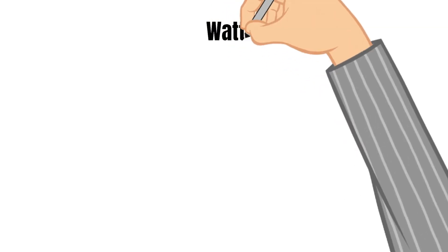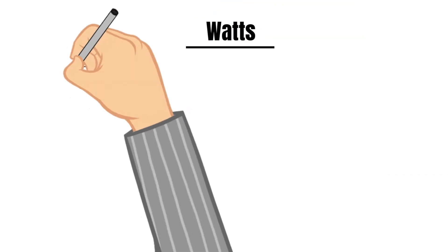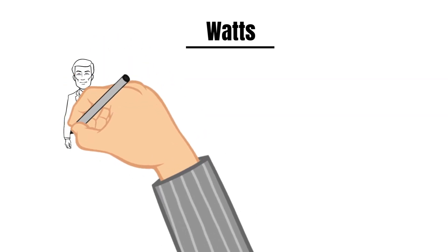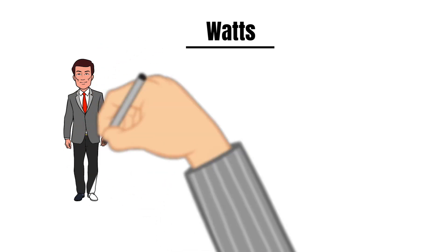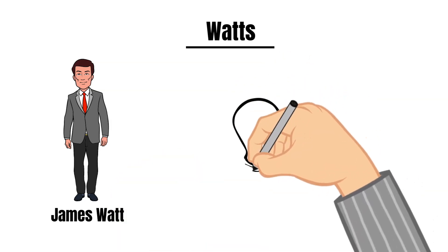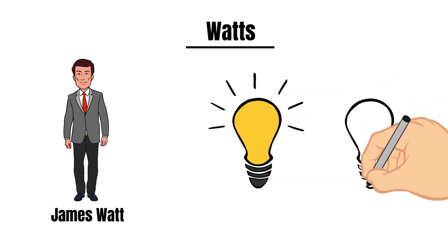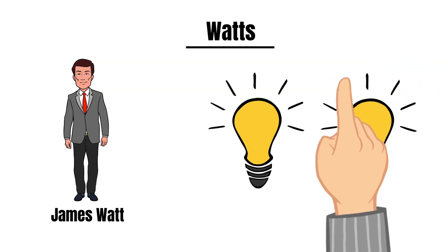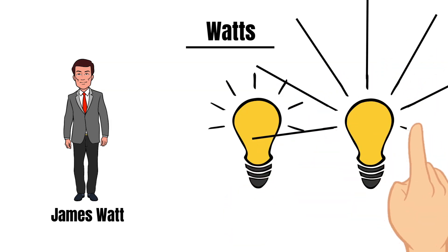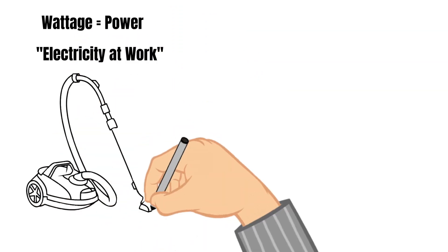Last, we will talk about measuring the power of electricity — we use watts to measure this. Watts are named after engineer James Watt. Out of all the units of measurement, this is probably the one you have heard about before. Typically in the store you will see 40-watt light bulbs and 60-watt light bulbs. The 60-watt light bulb is going to be brighter than the 40-watt light bulb — but why? Wattage, it turns out, is the amount of power an electric device consumes, or another way to think about it: electricity at work.